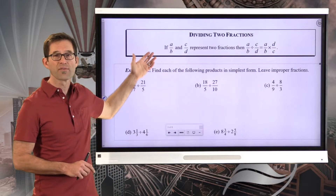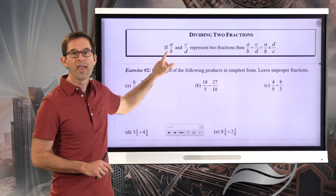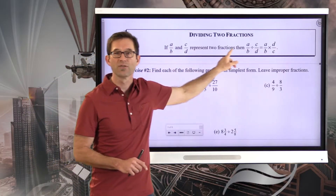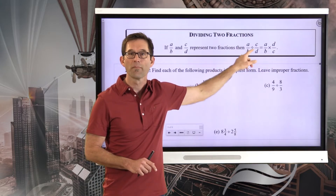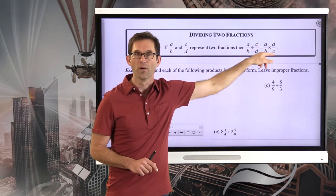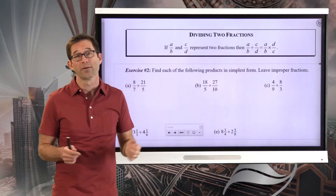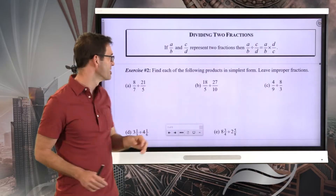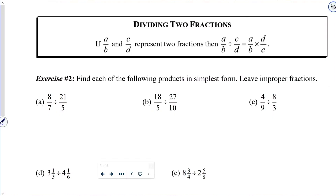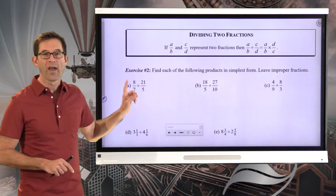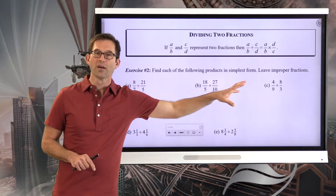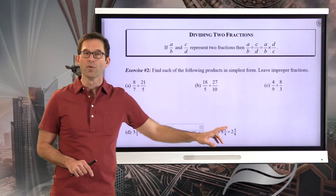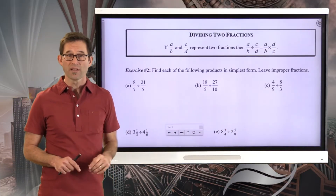Dividing two fractions — everything we just summarized: if a over b and c over d represent two fractions, then a over b divided by c over d equals a over b times d over c. Let's get a little bit of practice. Exercise number two: find each of the following products in simplest form; leave improper fractions. I'd like to do letter A together, then have you do B and C on your own, then we'll do D together, and then E on your own.